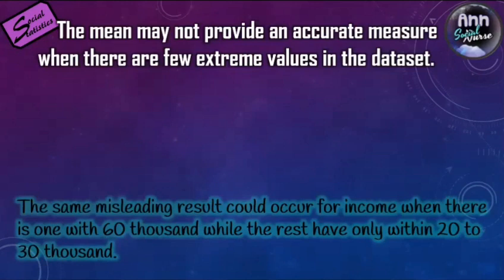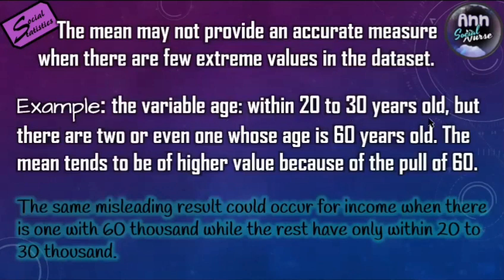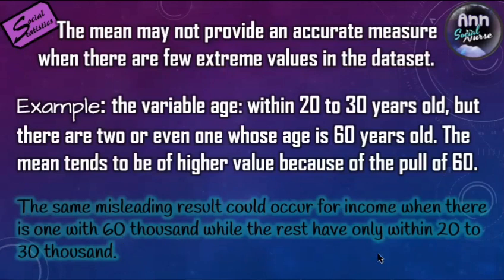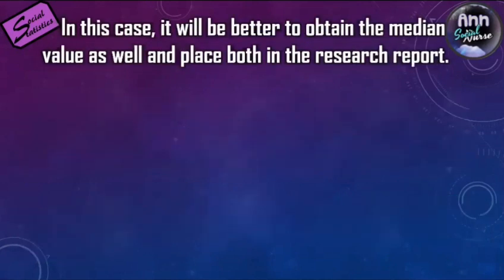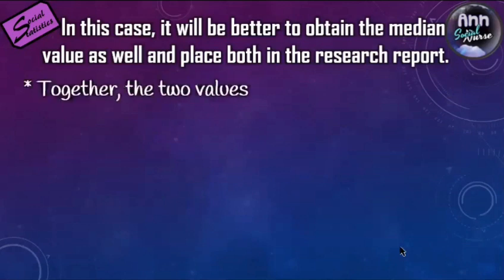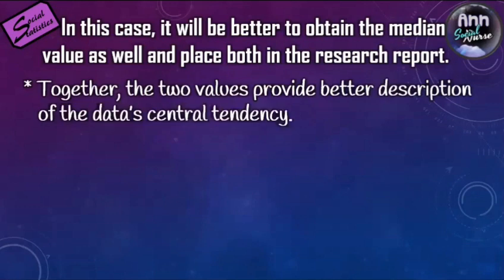The mean may not provide an accurate measure when there are a few extreme values in the data set. For example, if ages are within 20 to 30 years old but one or two people are 60 years old, the mean tends to be a higher value because of that 60, making it seem like people are older than they are. The same misleading result could occur for income when one person earns 60,000 while the rest earn 20 to 30,000. In this case, it is better to also obtain the median and place both values in the research report, as together they provide a better description of the data's central tendency.